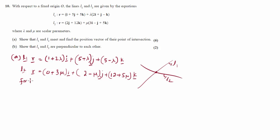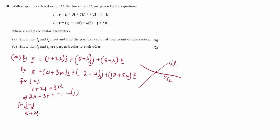For I equals I, we get 1 plus 2 lambda equals 3 mu, which gives 2 lambda minus 3 mu equals minus 1 — this is equation 1. For J equals J, we have 5 plus lambda equals 2 minus mu, so lambda plus mu equals minus 3. This is equation 2.